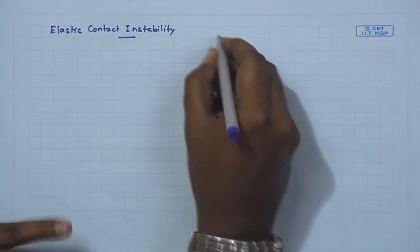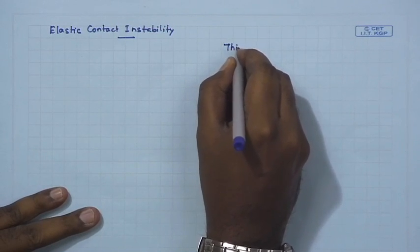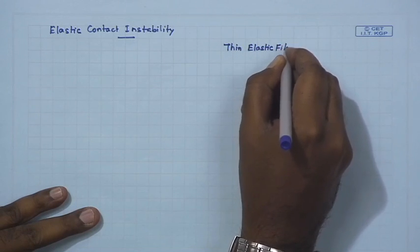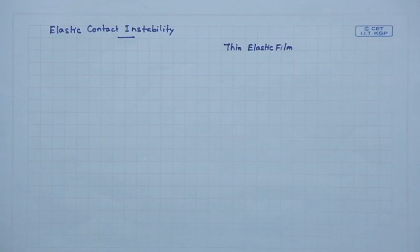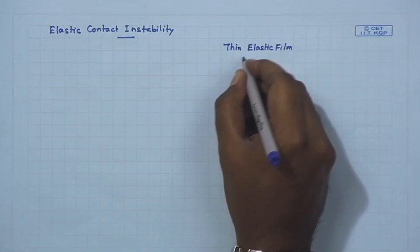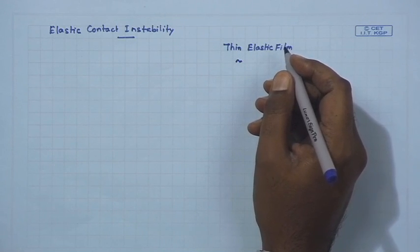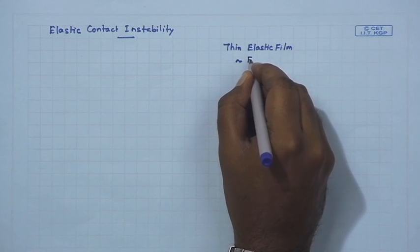The only difference is you would like to take thin elastic films, and these films are not as thin as the films required for dewetting. As you will soon see, the physics, though triggered by van der Waals forces, is not due to interfacial interactions across the two interfaces of a film. Therefore, the film thicknesses taken are in fact quite thick compared to dewetting films — these are in the range of a few microns.